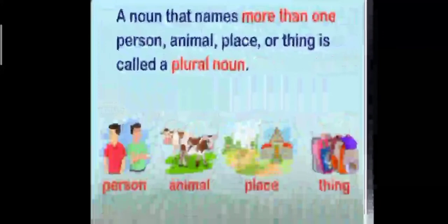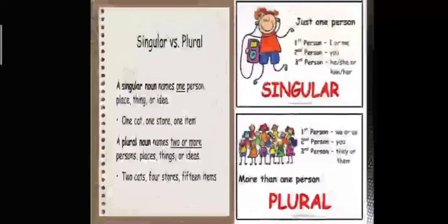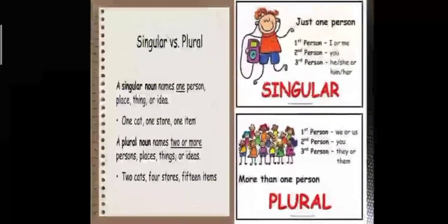When we talk about more than one person, animal, place or thing, we are talking about many things. It is called a plural noun. For example: boys, cows, garden and castle, bags etc. So the difference between singular and plural nouns — one thing represents singular noun, more than one thing represents plural nouns.